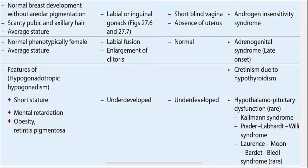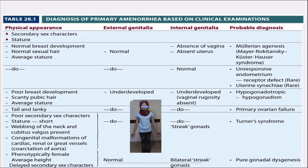Prader-Labhart-Willi syndrome: characterized by delayed puberty, short stature, obesity, and intellectual disability — presents features similar to cretinism. Lawrence-Moon-Bardet-Biedl syndrome (LMBBS): short stature, mental retardation, obesity, and retinitis pigmentosa. If a patient presents with short stature, mental retardation, obesity, retinitis pigmentosa, and underdeveloped external and internal genitalia, consider cretinism, hypothalamo-pituitary dysfunction, Kallmann's syndrome, Prader-Labhart-Willi syndrome, or Lawrence-Moon-Bardet-Biedl syndrome.